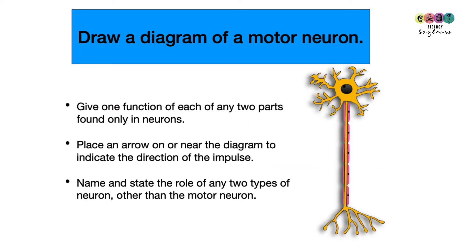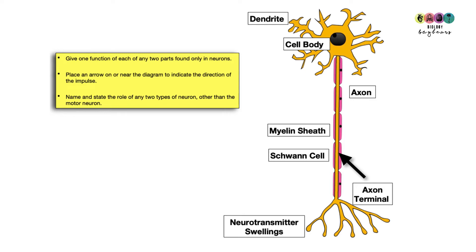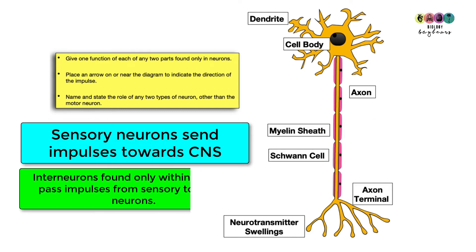Next question: draw a diagram of a motor neuron and give one function of each of any two parts found only in neurons. Pick two things only found on neurons and discuss their function. Place an arrow to indicate the direction of the impulse, and name and state the role of any two types of neuron other than the motor neuron. The fully labelled motor neuron includes: dendrite, cell body, axon, myelin sheath (made by Schwann cells), axon terminal, and neurotransmitter swellings. The arrow goes away from the cell body towards the neurotransmitter swellings. The two other neuron types are sensory neurons — sending impulses towards the central nervous system — and interneurons, found within the central nervous system, passing impulses from sensory to motor neurons.